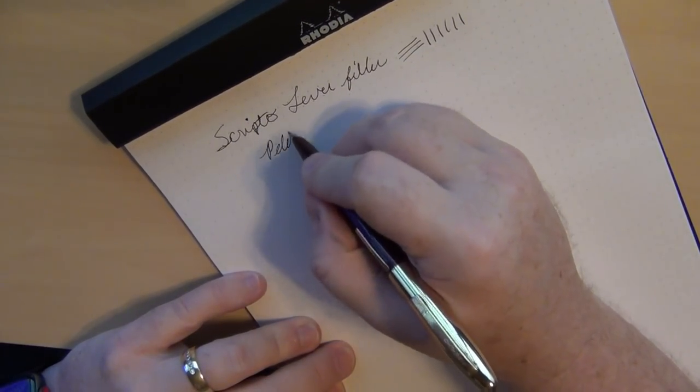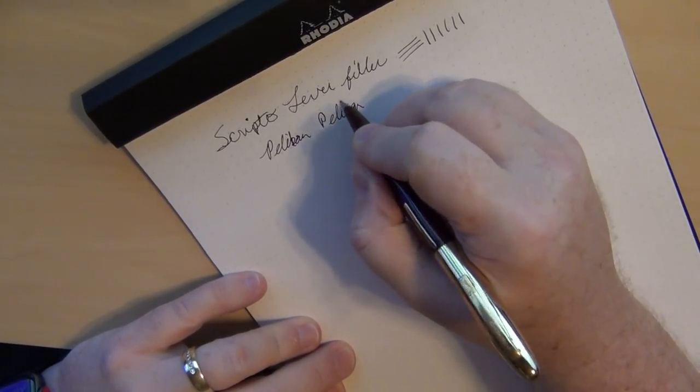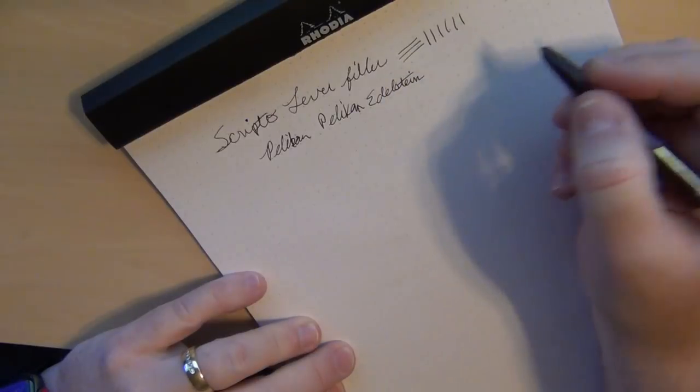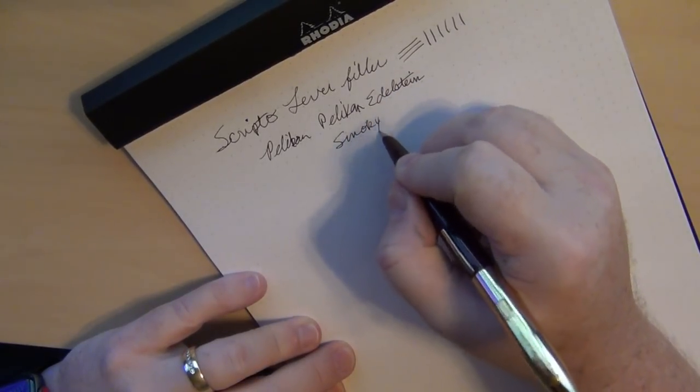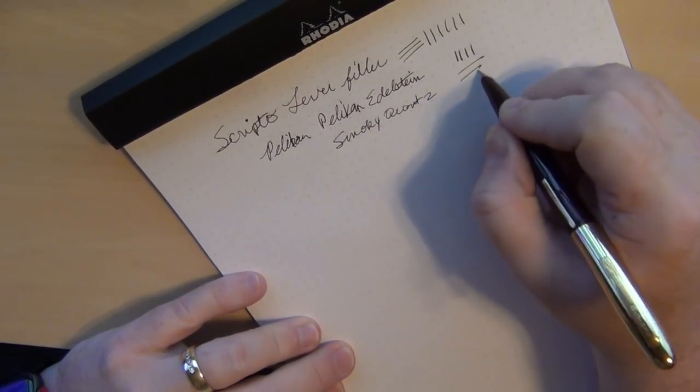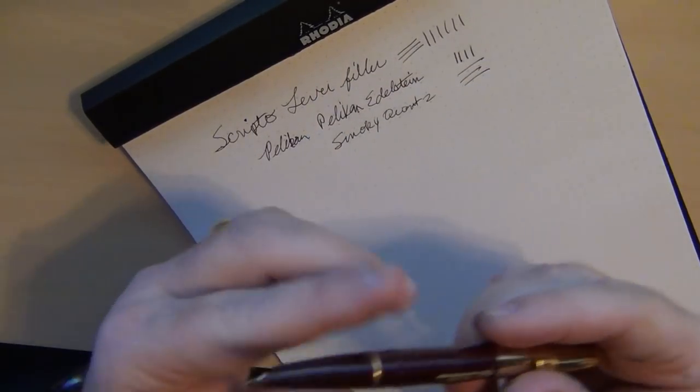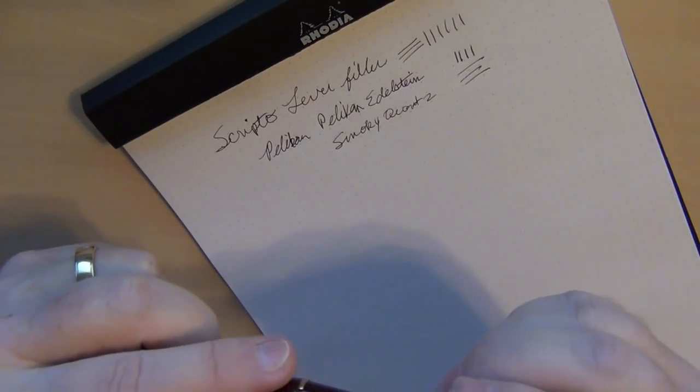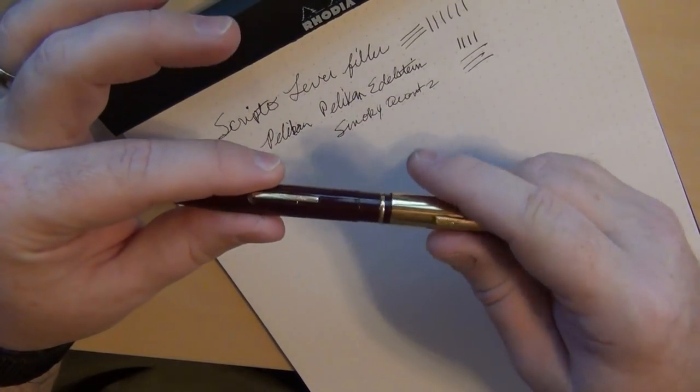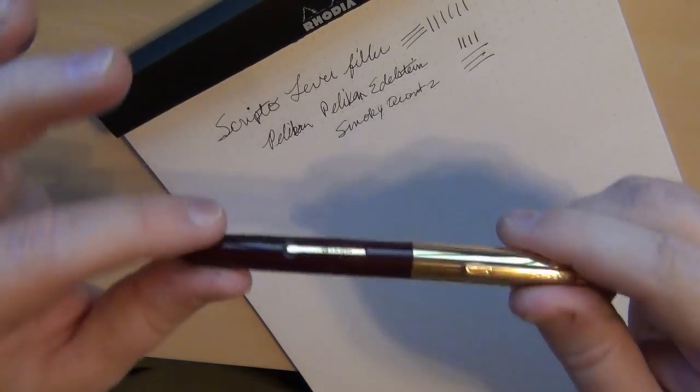So what I did was I put in some Pelikan Edelstein Smoky Quartz. I'm not usually much on brown inks and it really depends on what pen this ink is in. Some pens it looks great, other pens it looks horrible. This one doesn't look like diarrhea as much, it comes out very dark and I like it in this one. It's got a really hard pull to it because you can see it's got this ring here to help seal it for the cap, and it's a hard push and a hard pull, but it is a slip cap.